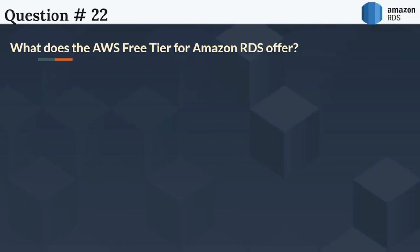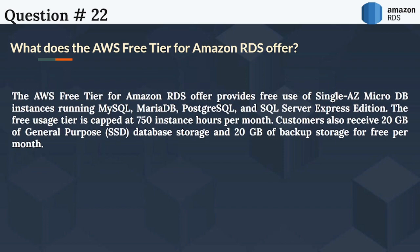The next question is: What does the AWS free tier for Amazon RDS offer? The AWS free tier for Amazon RDS provides free use of Single-AZ micro DB instances running MySQL, MariaDB, PostgreSQL, and SQL Server Express Edition. The free usage tier is capped at 750 instance hours per month. Customers also receive 20 GB of general-purpose SSD database storage and 20 GB of backup storage for free per month.